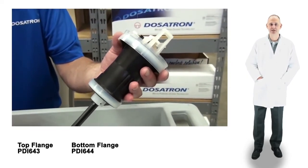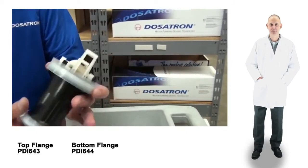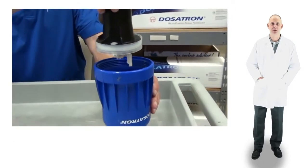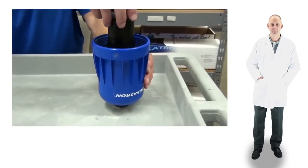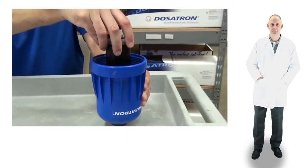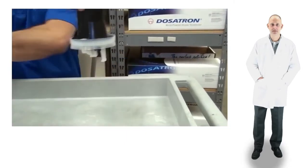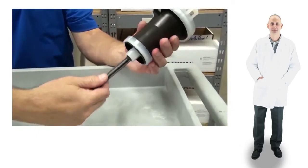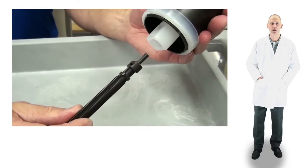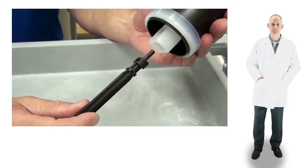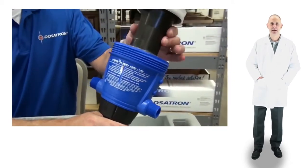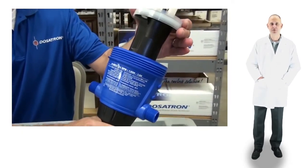Another way to check the flanges is by doing a fit test. To test the upper flange, invert the piston and insert it into the blue bell housing. It should fit snugly. To test the lower flange, remove the plunger by turning it a quarter turn counterclockwise and pulling it straight out. Now, insert the piston into the body. It should be a snug fit. If either is loose, the flanges need to be replaced.